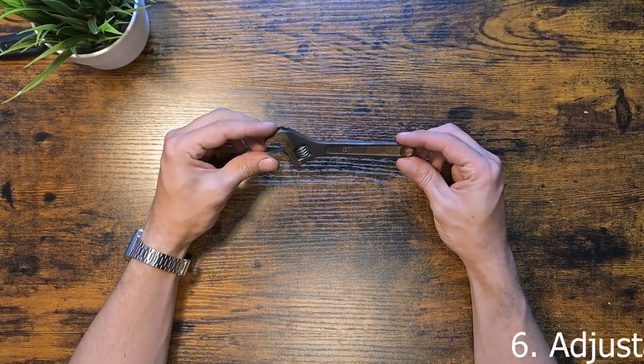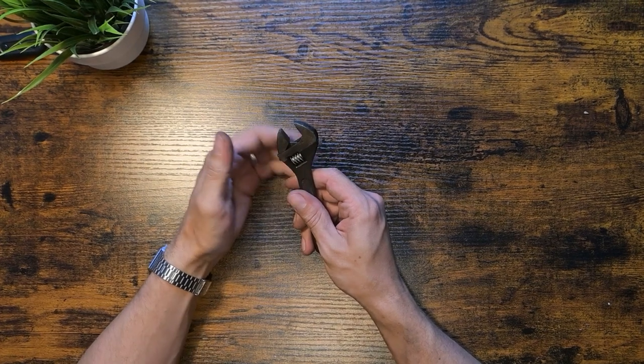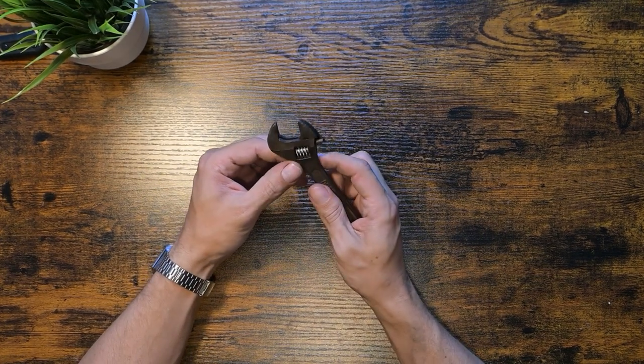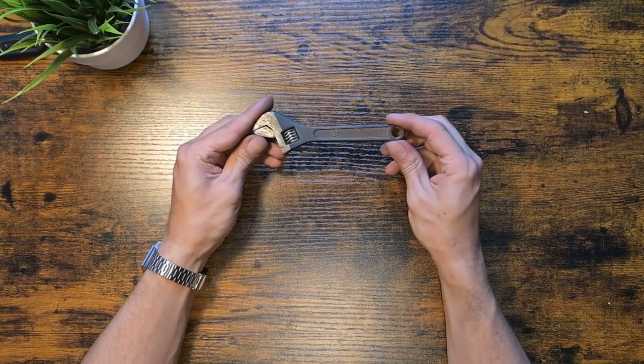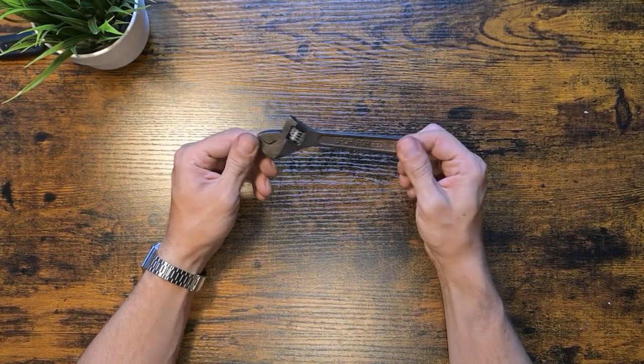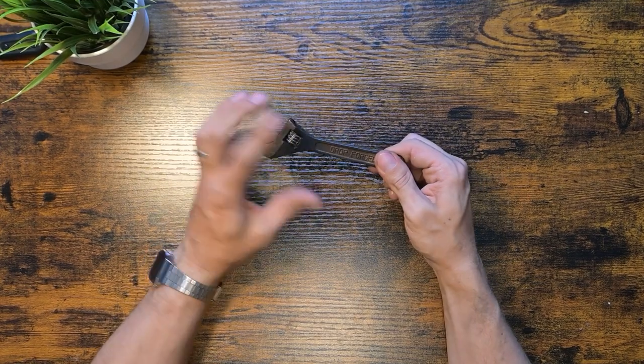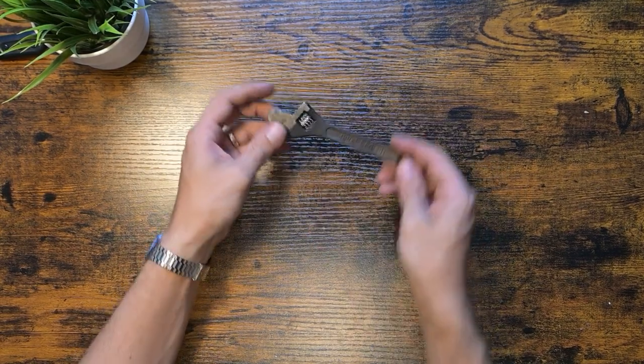Next up we have the trusty adjustable wrench. This tool is perfect for tightening or loosening nuts and bolts of various sizes. An adjustable wrench like this unfortunately doesn't always fit well in tight spaces. So a future upgrade could be a socket set. You can often find this at yard sales.